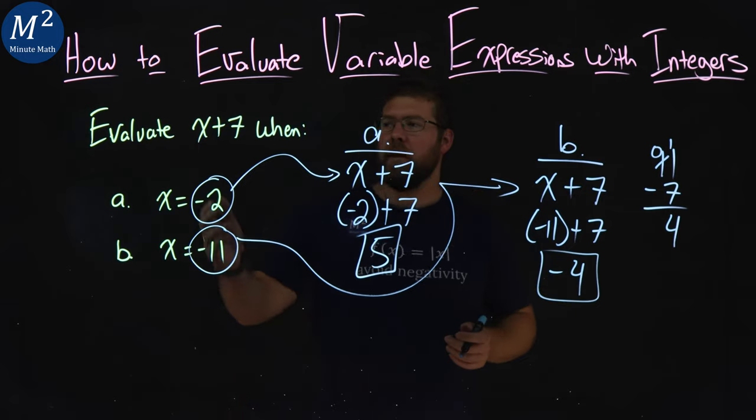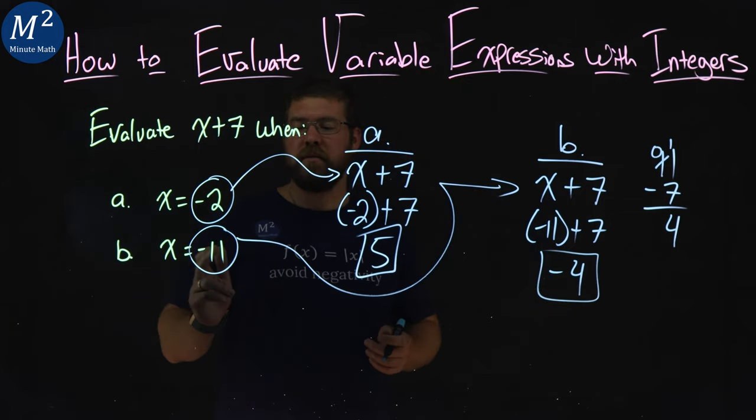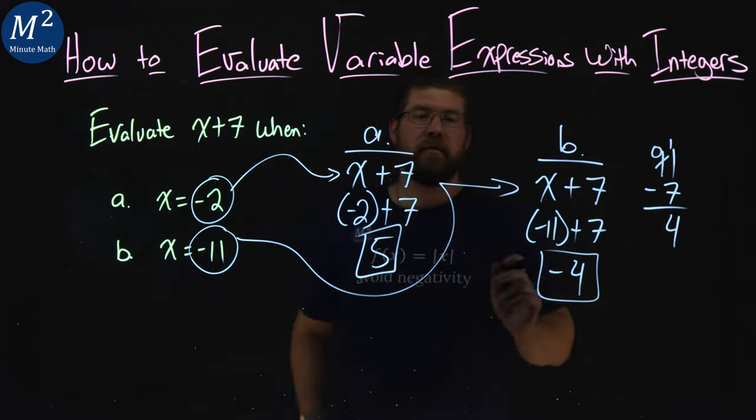And there we have it. When evaluating x plus 7 when x equals negative 11, we get negative 4.